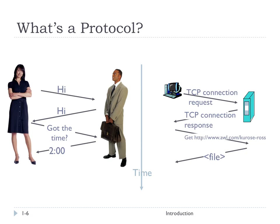Here's a visual picture of what we just talked about — getting the time from somebody. Those two people look very happy sharing the time with each other. On the right side, we see another example of how a TCP connection is created: starting with a TCP connection request, getting back a TCP connection response, then requesting some data and receiving a file back. This actually looks like an HTTP exchange. So we've talked about what the internet is from a nuts and bolts view and a service view, and what protocols are. As we go through this course, we'll talk more about specific protocols that help network operations carry on effectively.